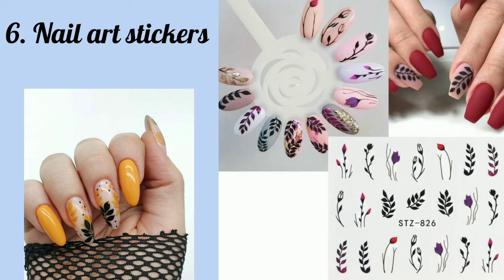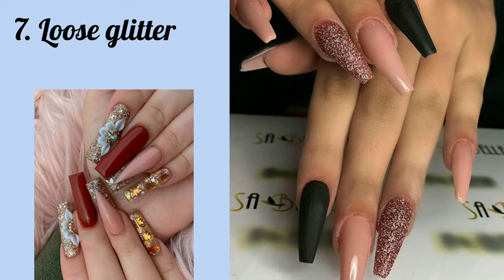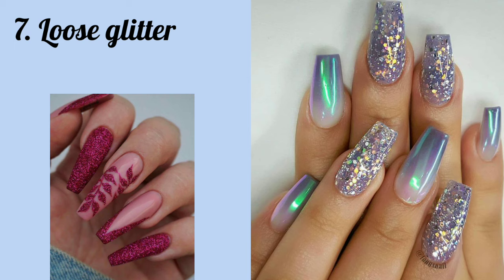Number six is nail art stickers — available in many different designs and patterns in the market. They have glue in them, which makes them very easy to use. Number seven is loose glitter — glitter doesn't always have to be inside nail polish. You can apply this type of loose glitter using a fan brush to create nice nail art.